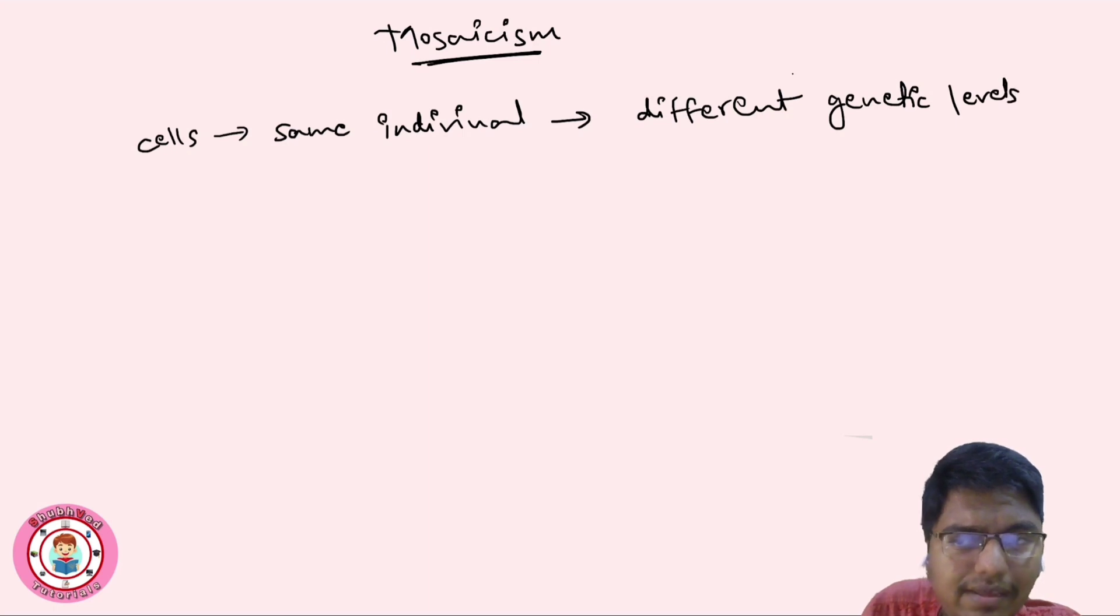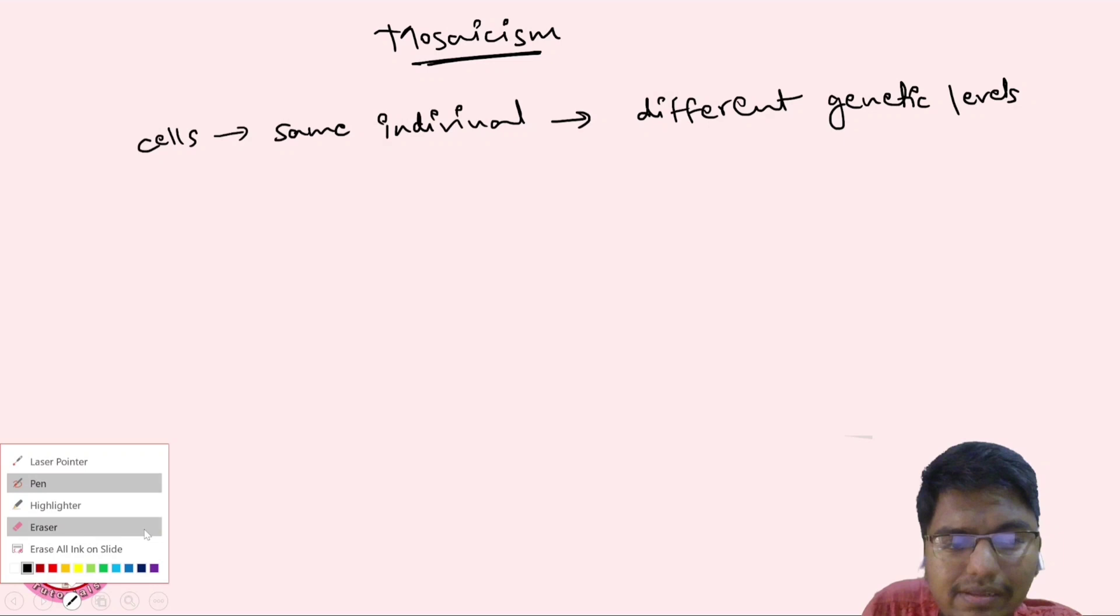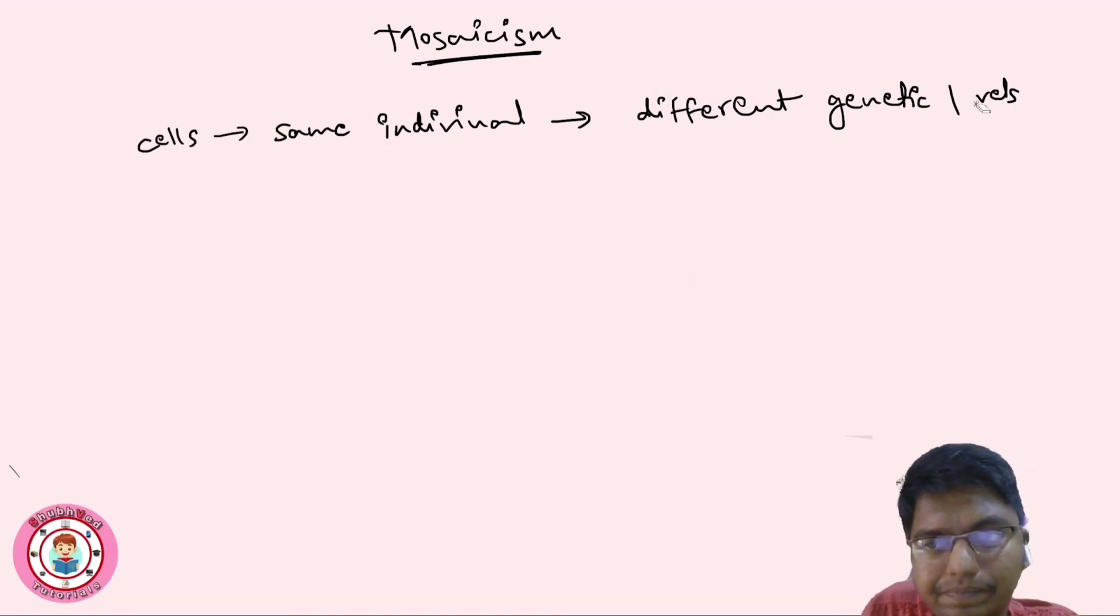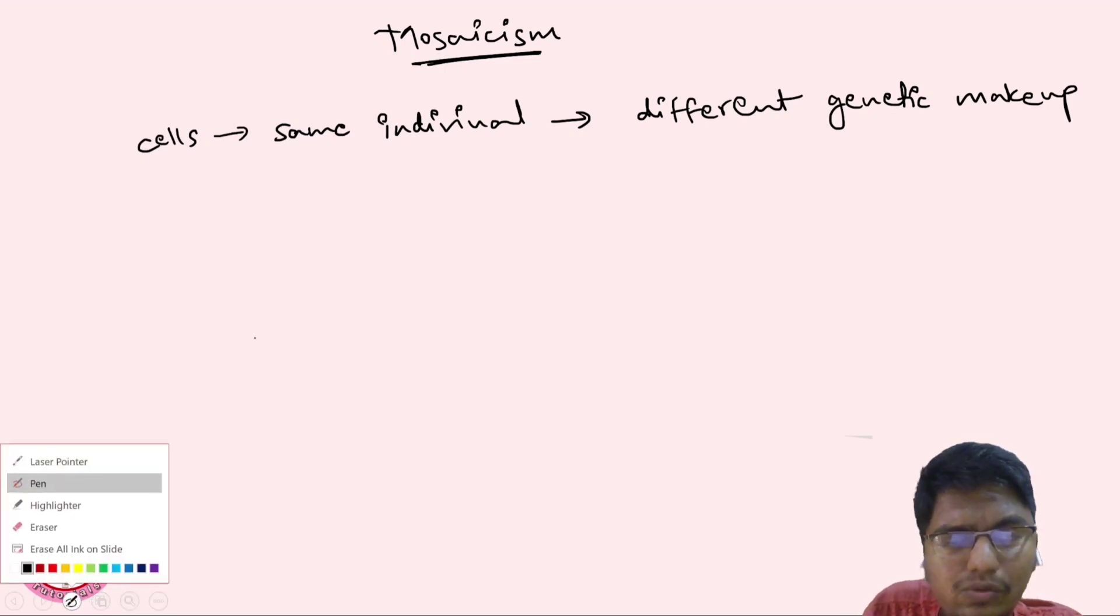Or we can say genetic level changes are there, resulting in different genetic makeup. This condition is known as mosaicism.